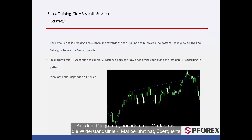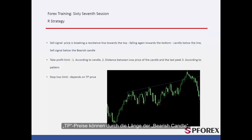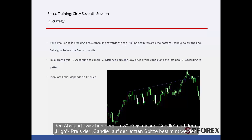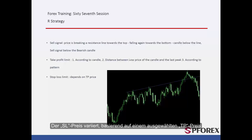On the graph, after the market price has hit the resistance line four times, it crossed the given line towards the top then returned towards the bottom. As a candle formed under the given resistance line, a trader could place a sell order. TP prices could be determined by the bearish candle length, the distance between the low price of this candle and the high price of the candle on the last peak, and also a flag pattern in this area detectable in a shorter timeframe. SL price varied based on selected TP price.